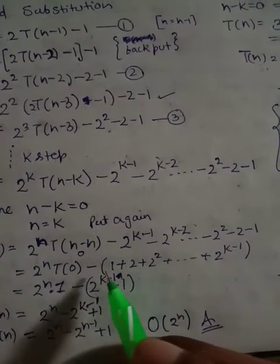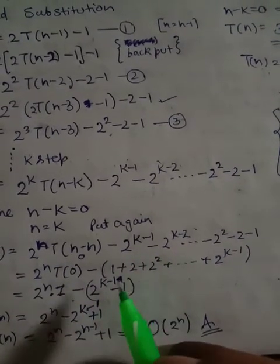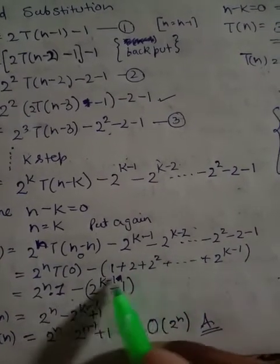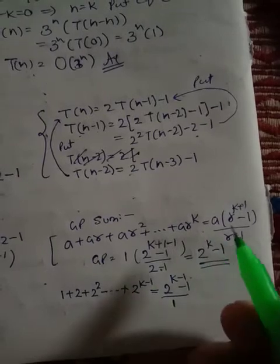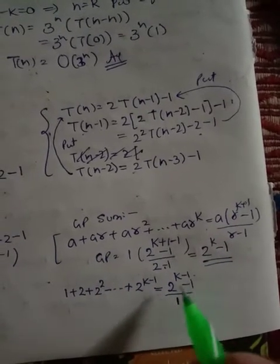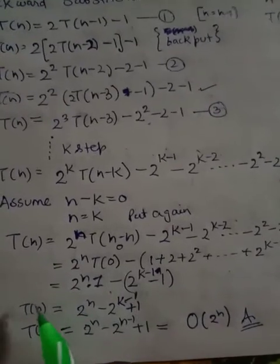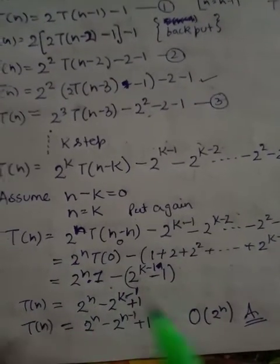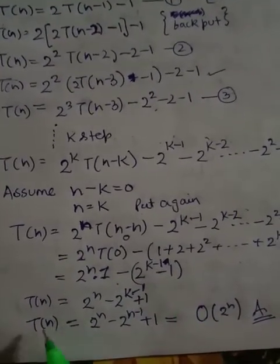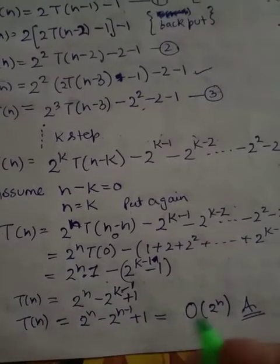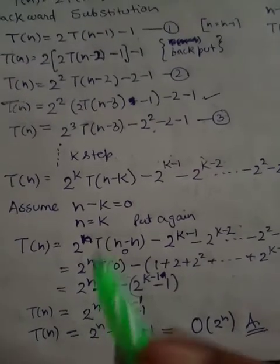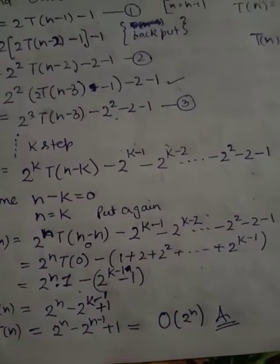Using the GP series formula, the sum of 2^(k-1) + ... + 1 equals 2^k - 1. So T(n) = 2^n - (2^k - 1) + 1. Substituting back k = n, we get T(n) = 2^n - 2^n + 1 + 1, and the time complexity of this recurrence relation is O(2^n).